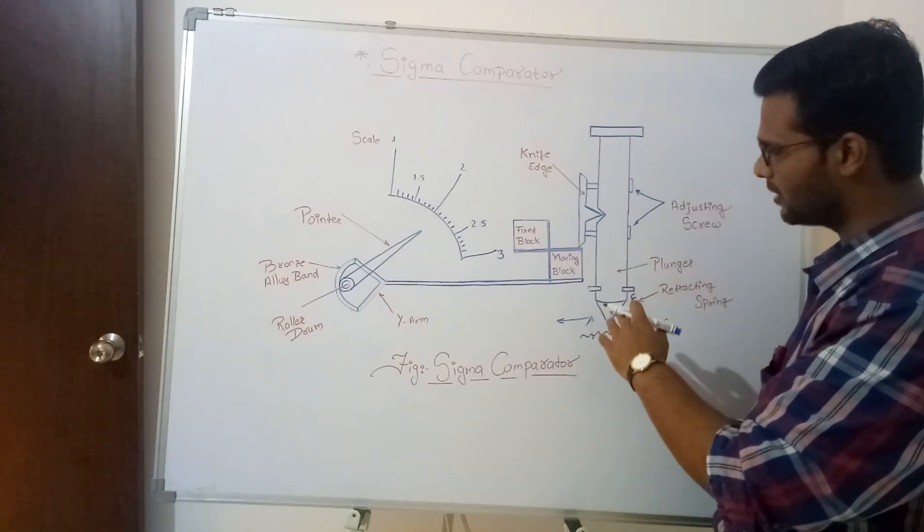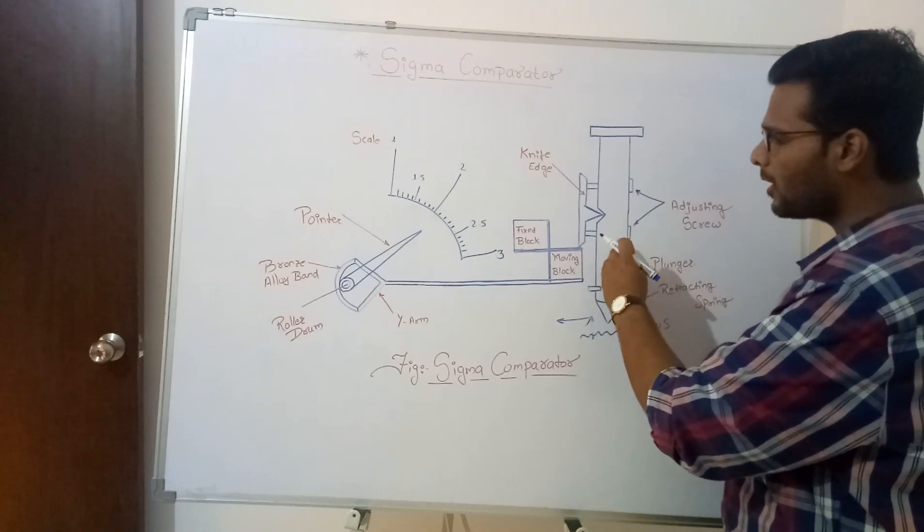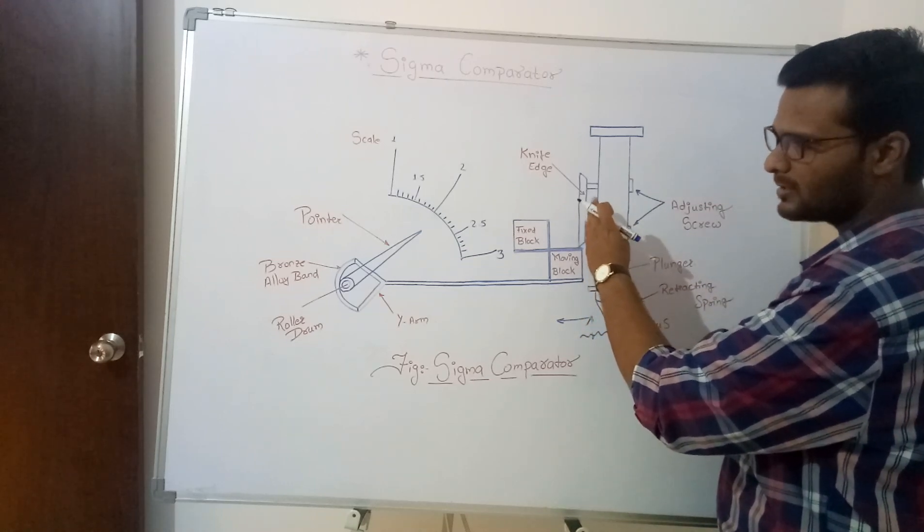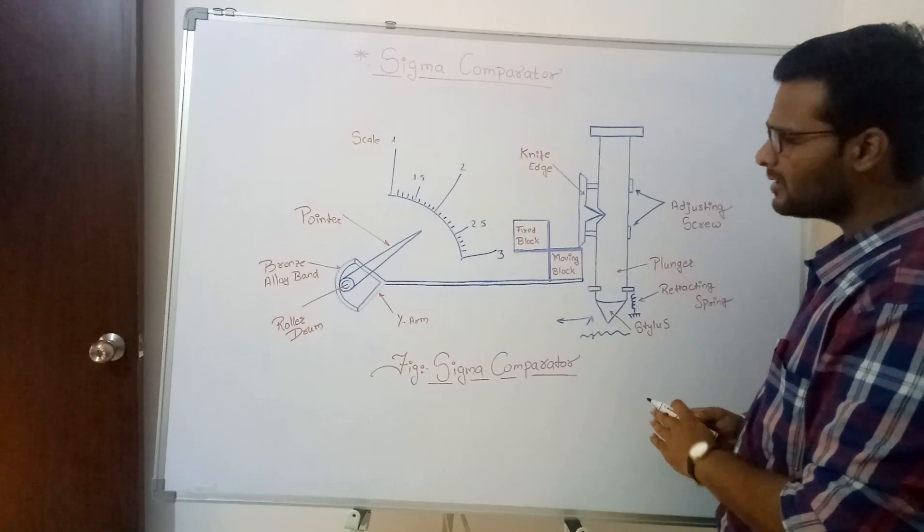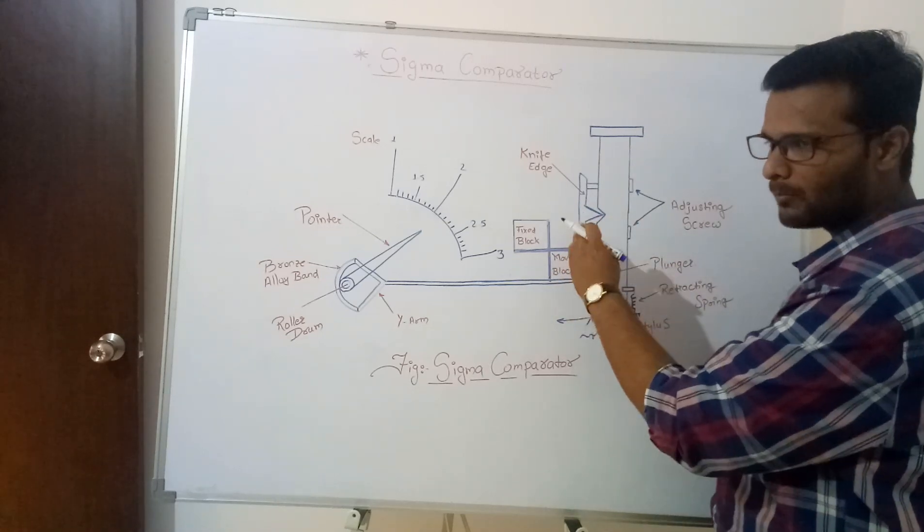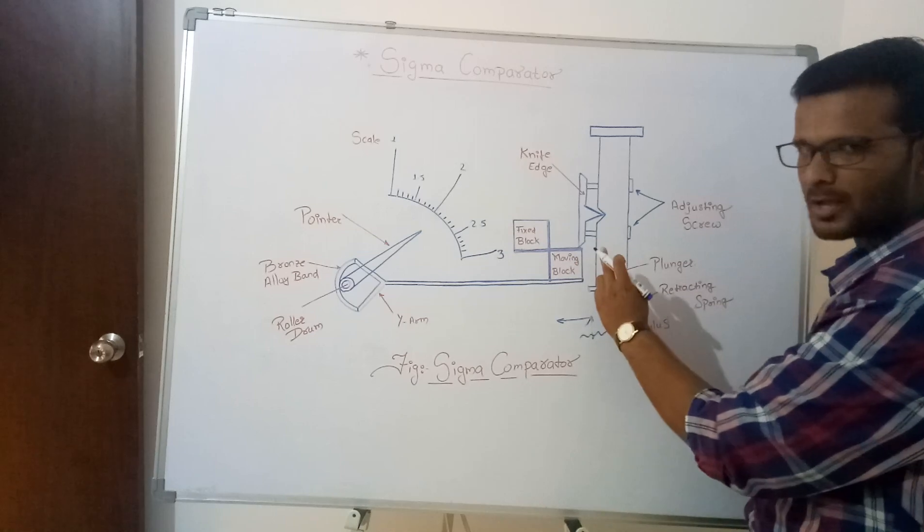What happens this stylus or plunger is connected to the knife edge. This knife edge in turns moves the moving block due to which when it moves up.